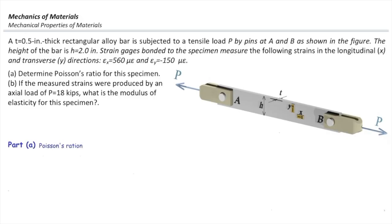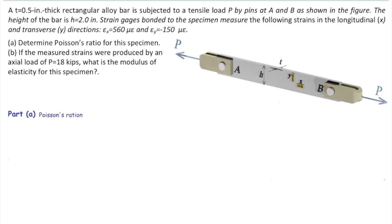Poisson's ratio is the relation between the normal and lateral strain. Which one is the normal strain, which is the lateral strain? The strain aligned with the direction of stress or aligned with the direction of force is called the normal strain.